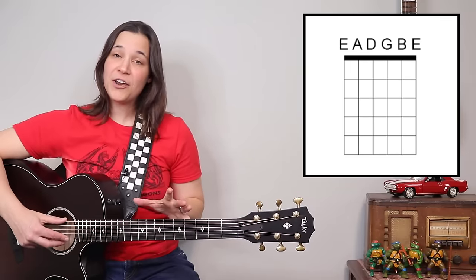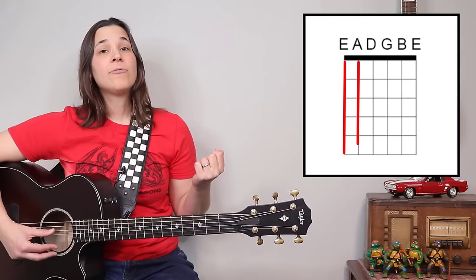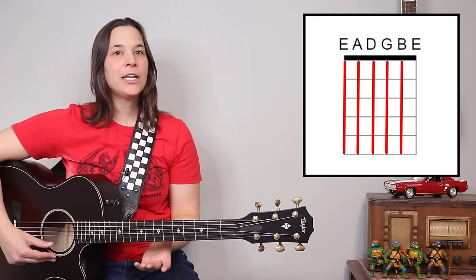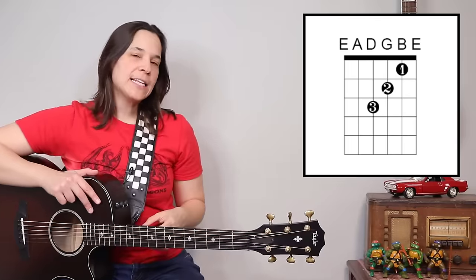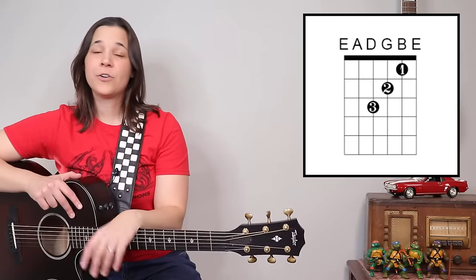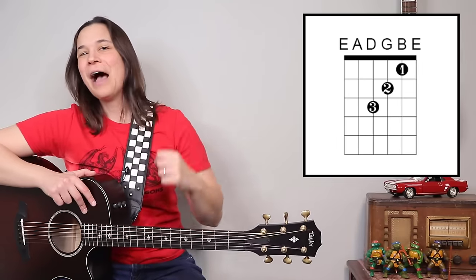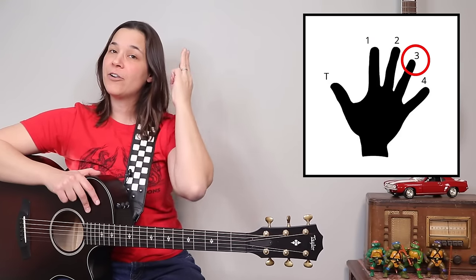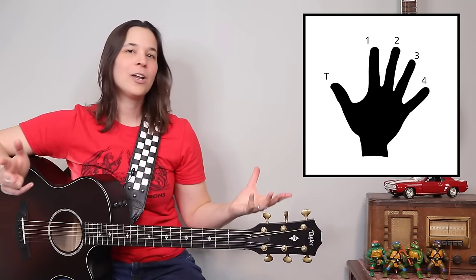We have six strings on our guitar. The really thick one at the top is an E, followed by A, D, G, B, and another E. You can remember that with the mnemonic: Eddie, A, Dynamite. Goodbye, Eddie! The last thing you need to know about the chord diagram is there will be circles with numbers on it. Number one is your index finger, number two is your middle finger, number three is your ring finger, and number four is your pinky — and this is the same whether you are a righty or a lefty.